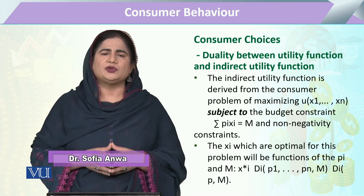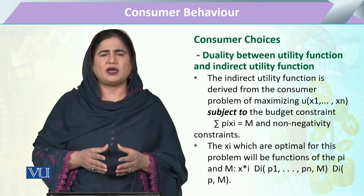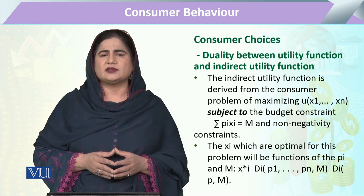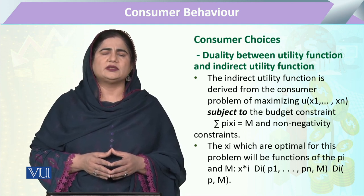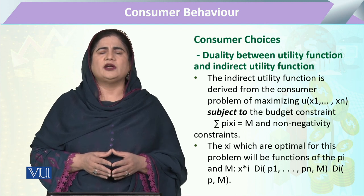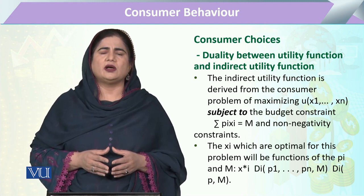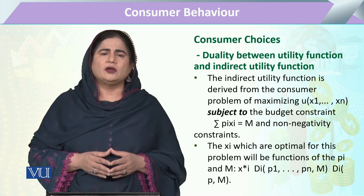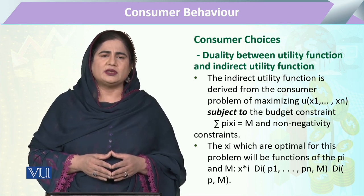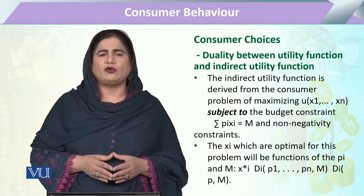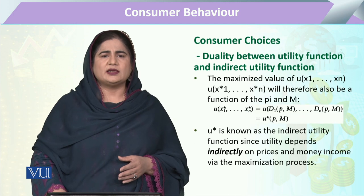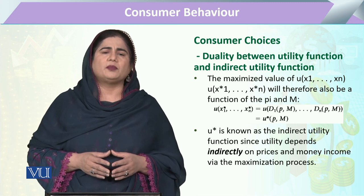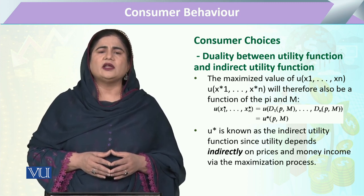Keeping in view the indirect utility function, we utilize the maximization of utility subject to a constraint, and that constraint tells us that all the expenditure spent for the gain of that utility has to be equal to the budget or the income of the consumer. So utility is maximized through the price of the commodities and with the income in the hand of the consumer. In this sense, utility is maximized indirectly through two variables: the price of the commodities and the income of the consumer.